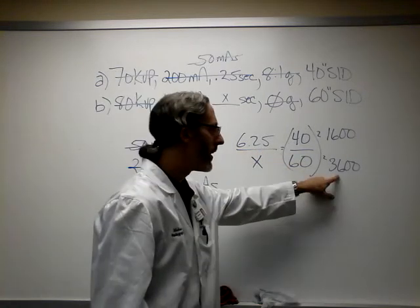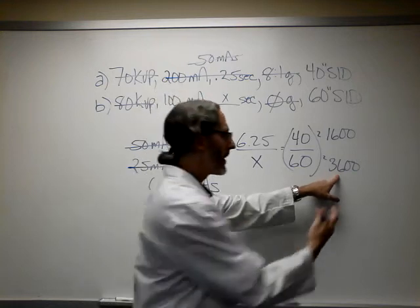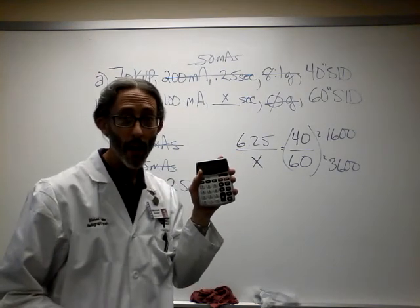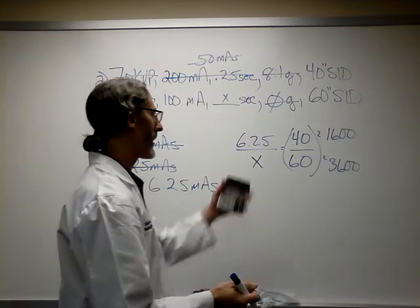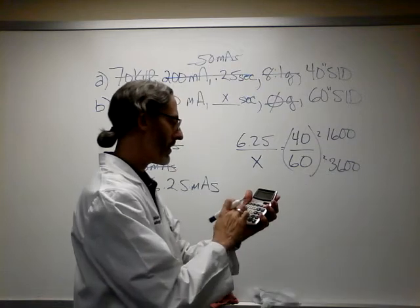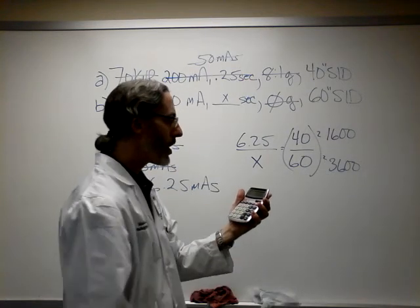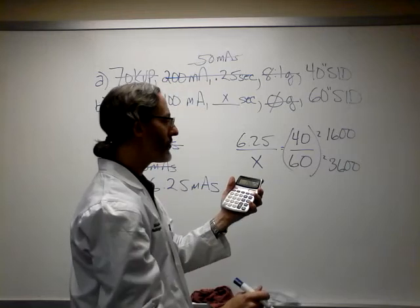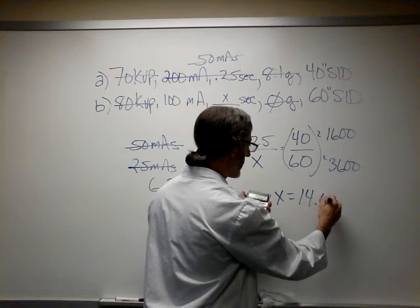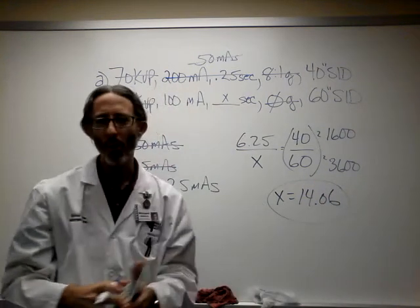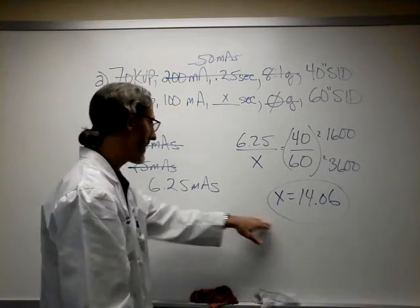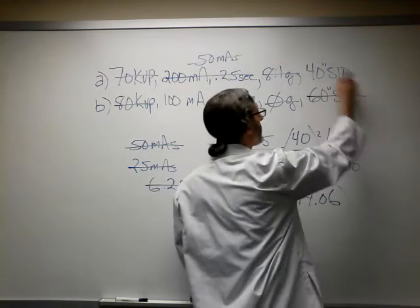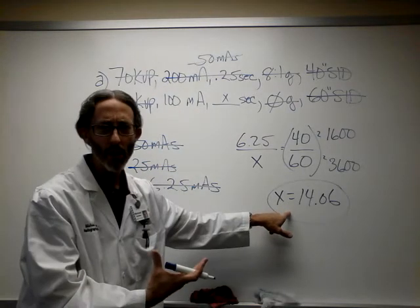We're going to multiply 6.25 by 3,600. When we get that, we're going to then divide by 1,600. Would you like to know what those numbers are right now? Let's just do it for fun. I happen to have a handheld computer, commonly known as a calculator. Let's do that real quick. 6.25 multiplied by 3,600 equals 22,500. That's a large number. Divided by 1,600 gives you 14.06. 14.06 mass. Isn't that lovely? It's wonderful, isn't it? Guess what happens to this? Gone. We don't care about that anymore. It's not relevant. We've compensated for our distance change. Now our working mass is 14.06.